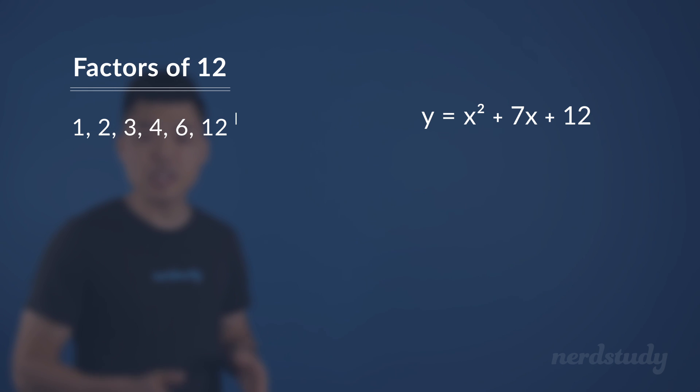Now, from these factors, the most important question to be asking for factoring a quadratic equation is this: Which two factors, when multiplied together, would result in this number, and when added together, would result in this one, assuming i and j are factors.